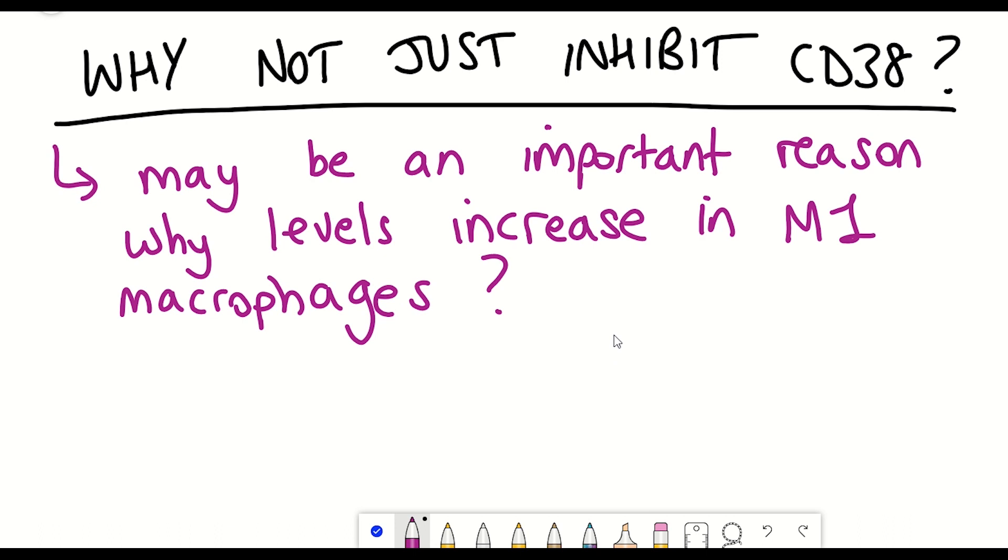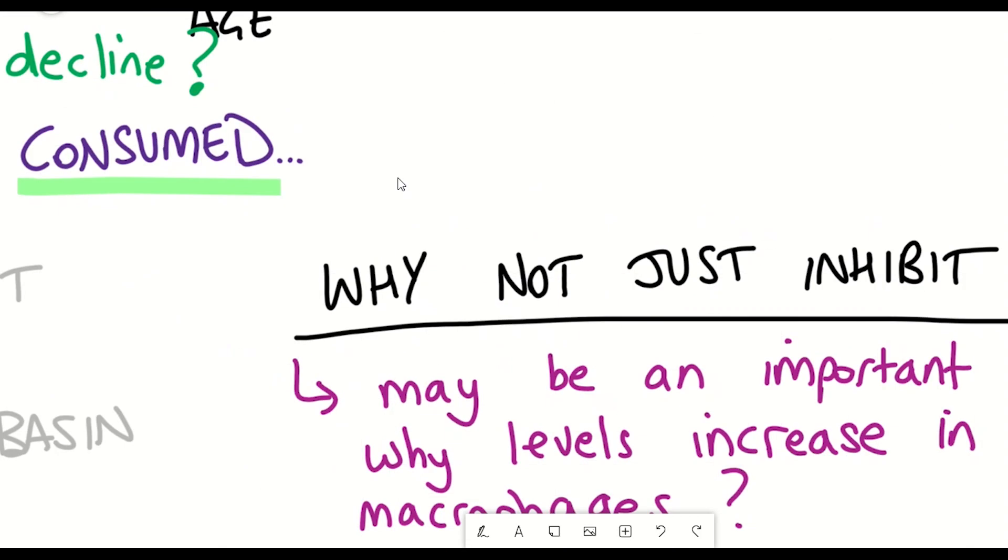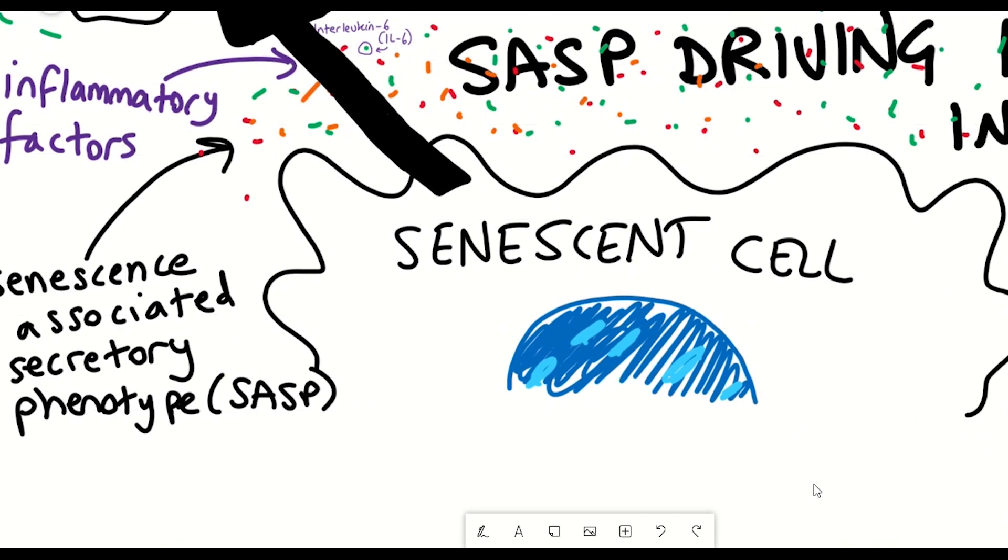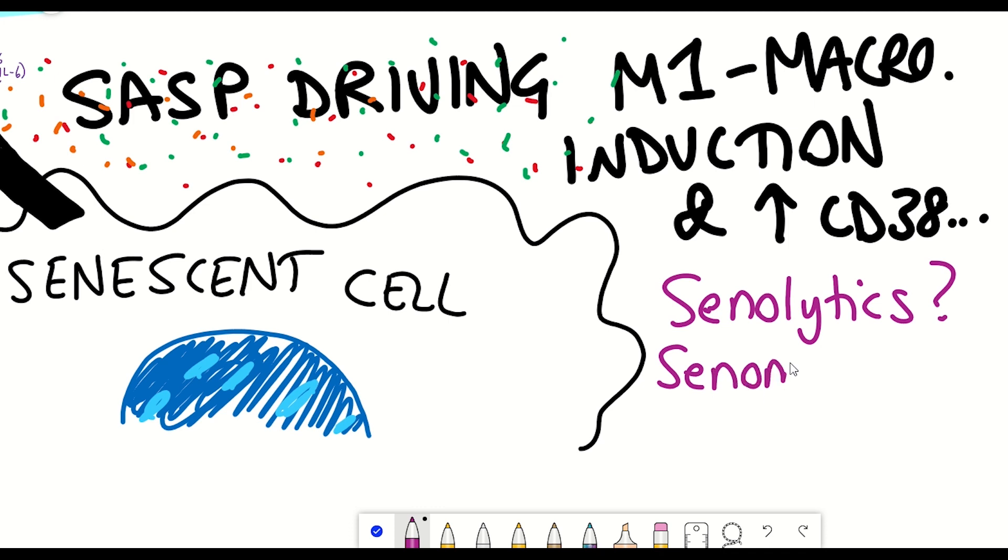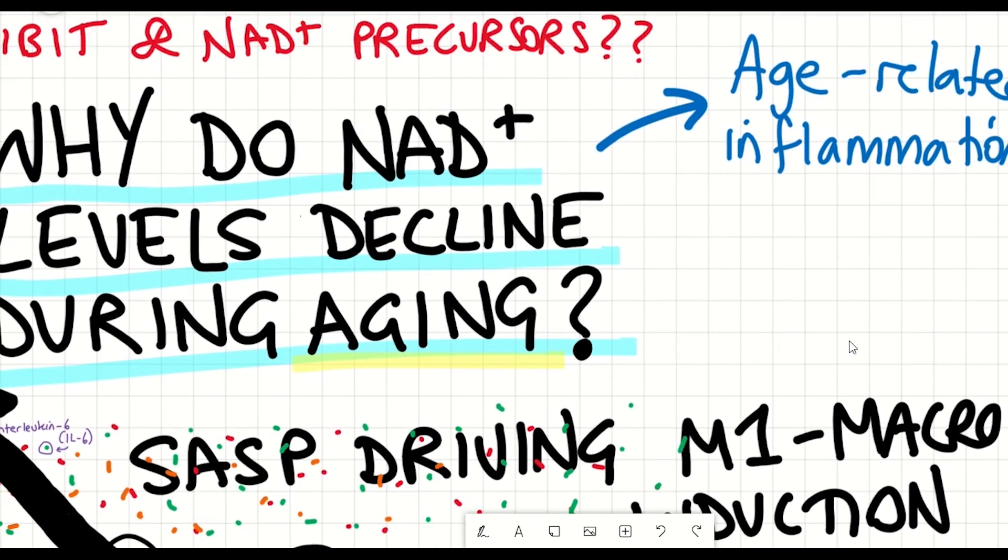Moreover, instead of CD38, these studies also show the importance of senescent cells actually being upstream and driving CD38 activation in the macrophages through the secretory inflammatory phenotype. So having senolytics that kill senescent cells, or senomorphics which are thought to ameliorate the secretory phenotype, could be alternative potential therapeutic options to help boost NAD plus levels.